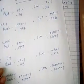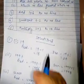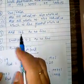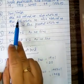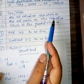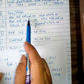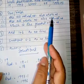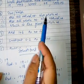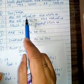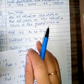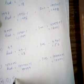Question number 2 is true or false. The first statement is: are all natural numbers also whole numbers? We already know that natural numbers start from 1, 2, 3 and whole numbers start from 0. So yes, all natural numbers are included in whole numbers. The first one is true.